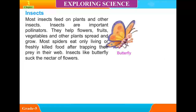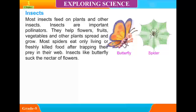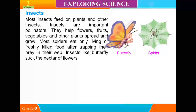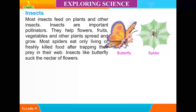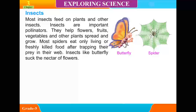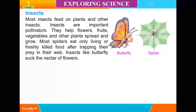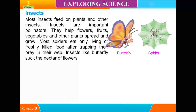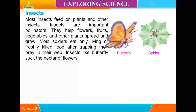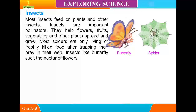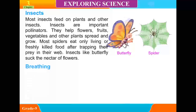Insects: Most insects feed on plants and other insects. Insects are important pollinators; they help flowers, fruits, vegetables, and other plants spread and grow. Most spiders eat only living or freshly killed prey after trapping them in their webs. Insects like butterflies suck nectar from flowers.